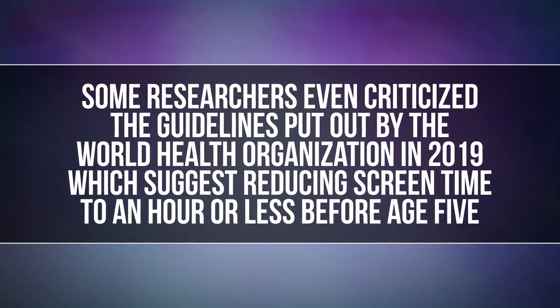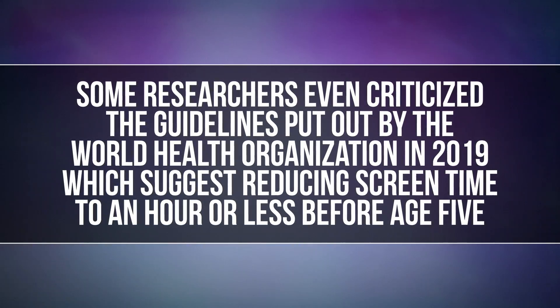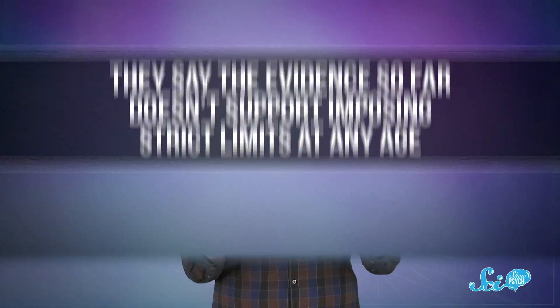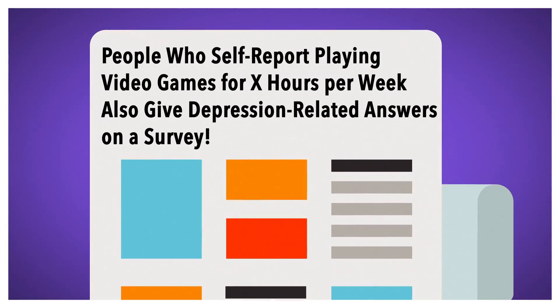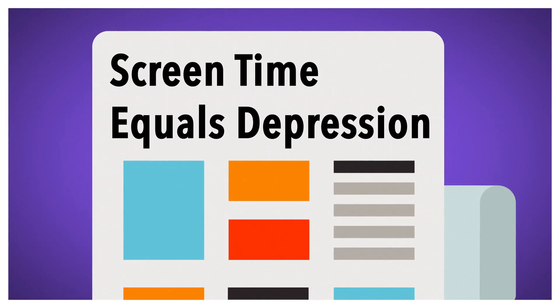It's also worth noting that studies haven't universally condemned screen time or social media use. A 2017 systematic review examined 43 studies on the topic between 2003 and 2013, and surprisingly, most of them actually found mixed or no effects of social media on adolescent well-being. Some researchers even criticized the guidelines put out by the World Health Organization in 2019, which suggest reducing screen time to an hour or less before the age of five, because they say the evidence so far doesn't support imposing strict limits at any age. All of these studies can only tell you specific answers to specific questions — like how likely it is that people who self-report playing video games for X hours a week also give depression-related answers on a survey — and that gets generalized to 'screen time equals depression,' even though that is hugely oversimplifying it.